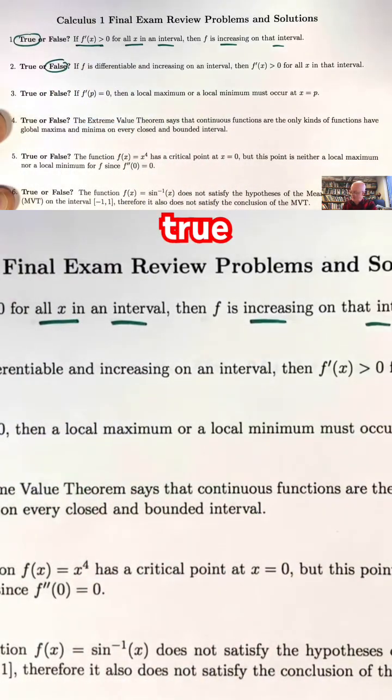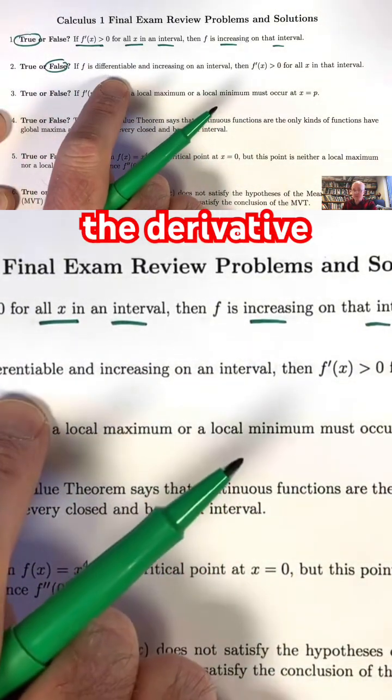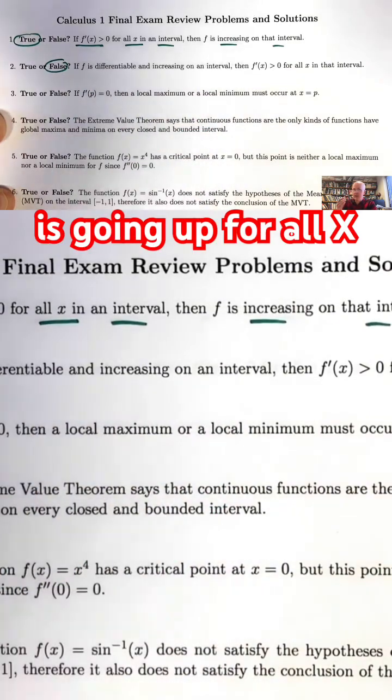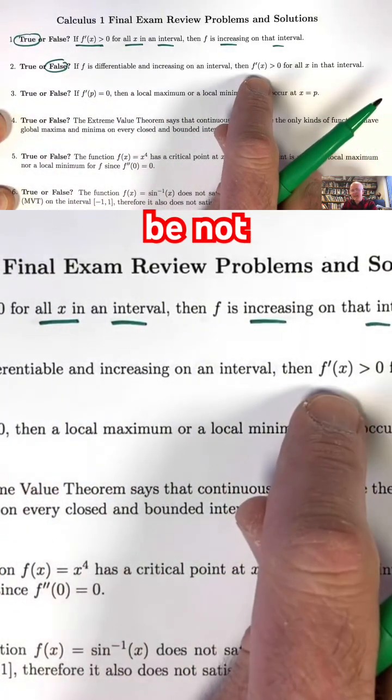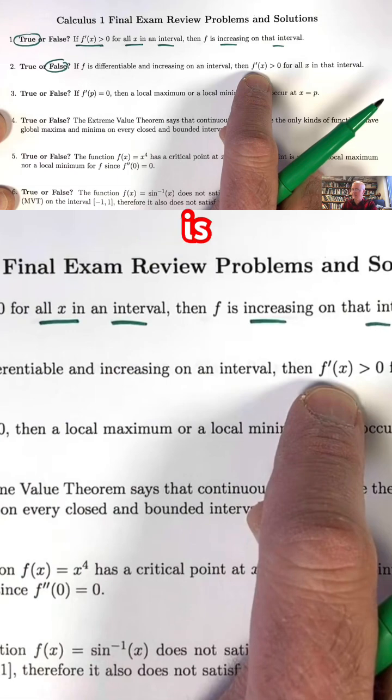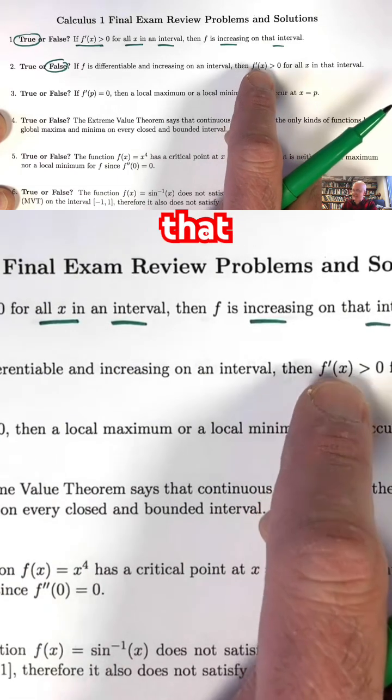It sounds true. The function is differentiable, the derivative always exists, and is going up for all x in the interval. How could it be not true that f prime is always positive? That sounds true.